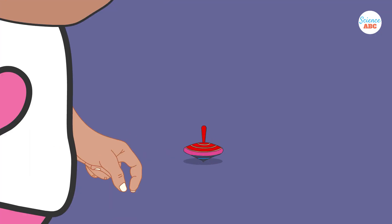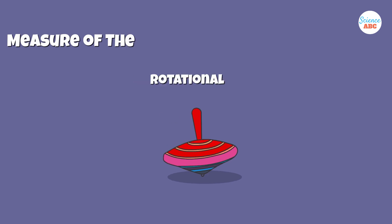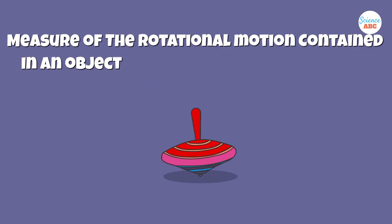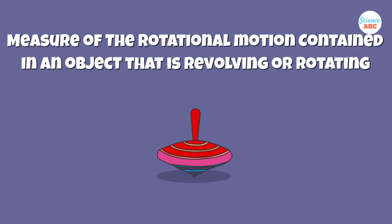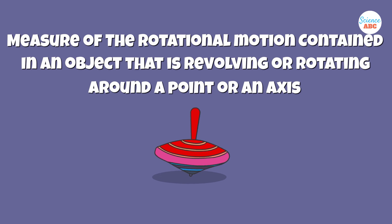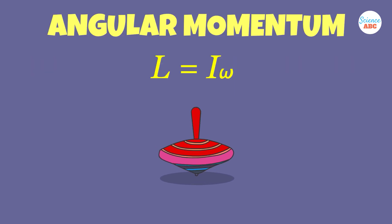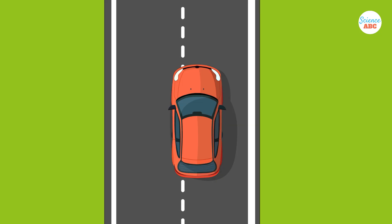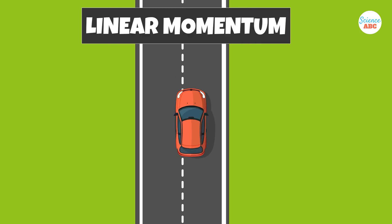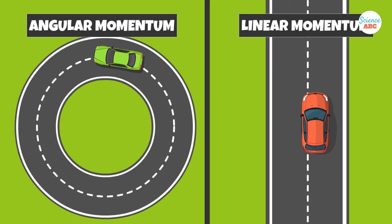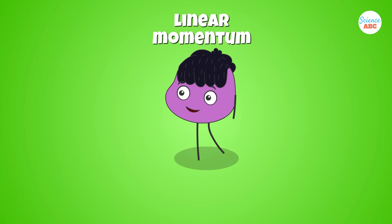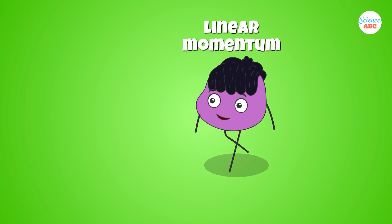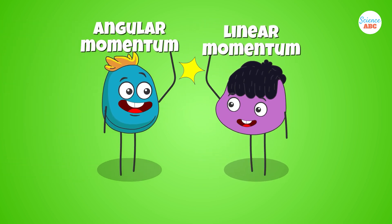Simply put, angular momentum is a measure of the rotational motion contained in an object that is revolving or rotating around a point or an axis. It is calculated as the product of the moment of inertia and the angular velocity of the object. Similar to linear momentum, which applies to objects in linear motion or moving in a straight line, angular momentum applies to objects that are rotating or revolving. The mathematical formula for angular momentum is similar to that of linear momentum.